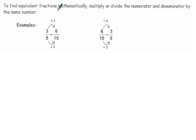To find equivalent fractions mathematically without having to draw a picture, you can multiply or divide the numerator and the denominator by the same amount. For example, 3 fifths. If you multiply the numerator by 2 and the denominator by 2, you get 6 tenths, and these are equivalent fractions. We could also go the opposite direction, 6 tenths. If we divide both the numerator and the denominator by 2, we get back to 3 fifths.